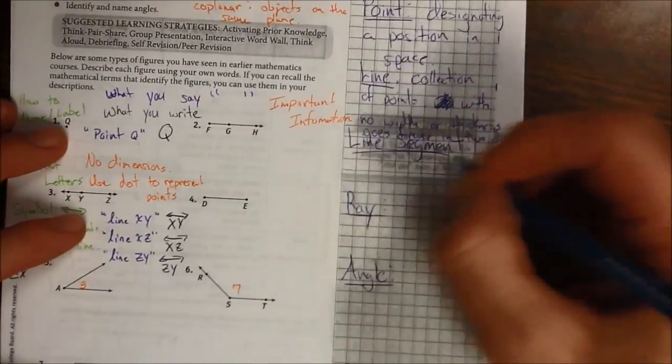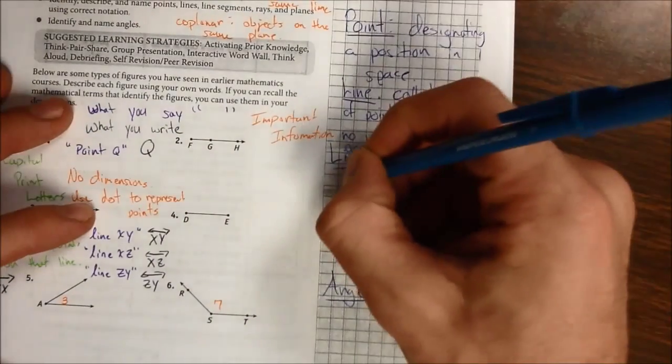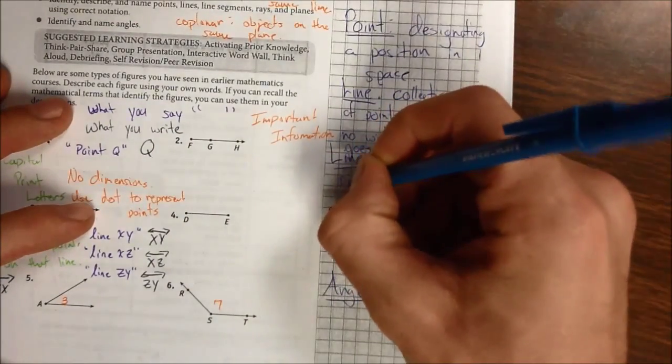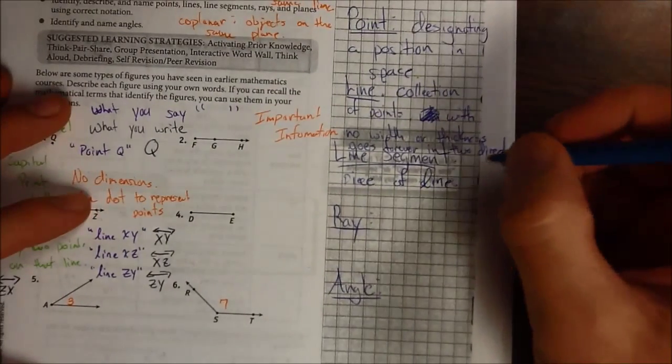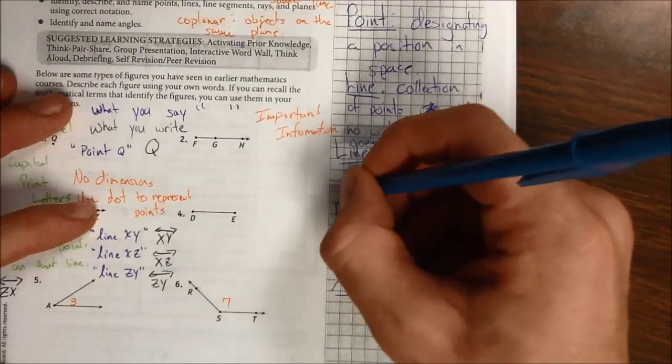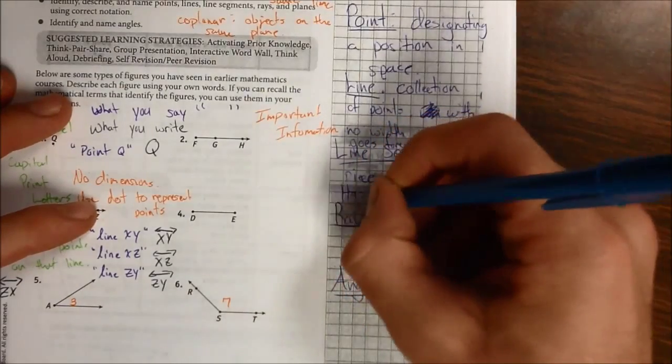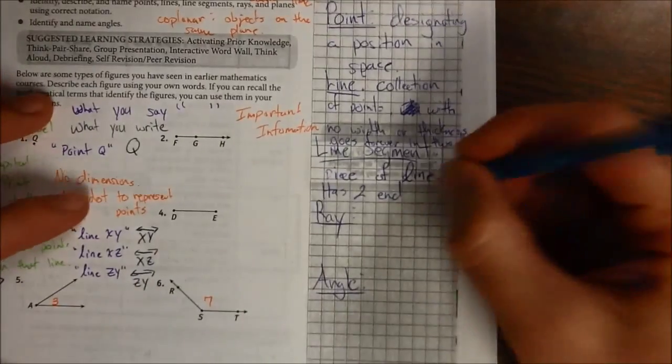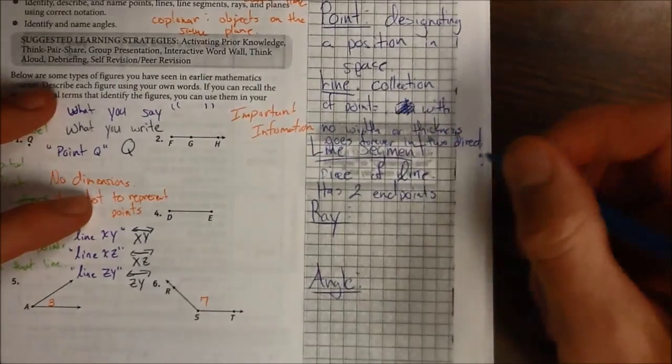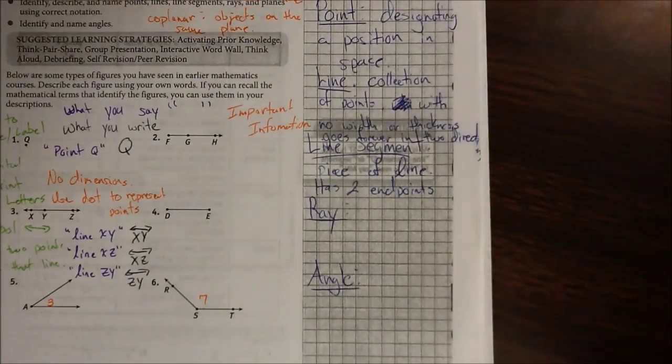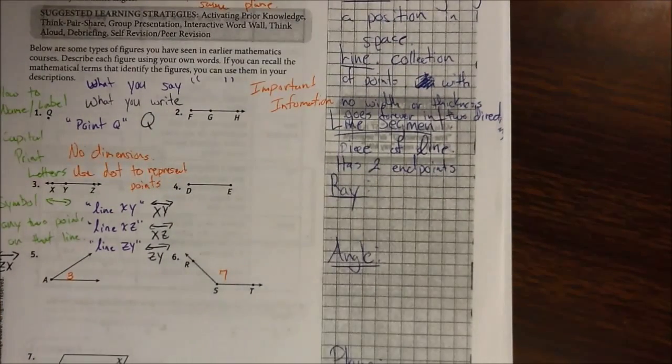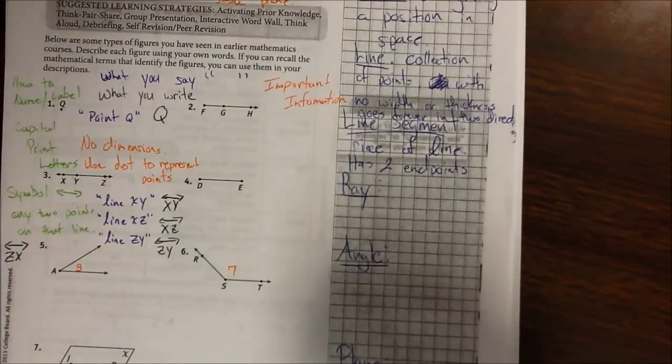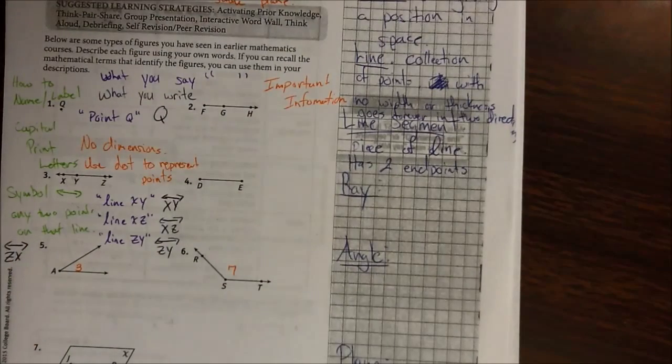So however you want to write that, I'm going to put piece of line. And a segment has two endpoints. So there's a clear beginning and there's a clear end to segments. Segments you can measure because, like I said, there's a clear beginning and clear end, so you can measure that if you would like to.